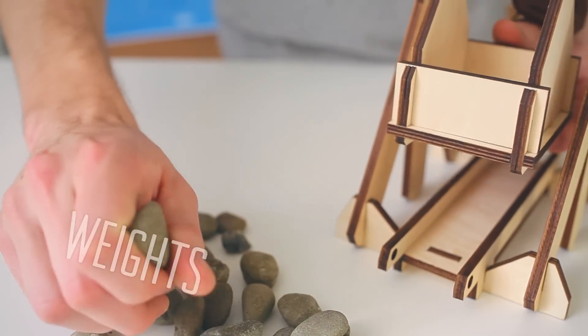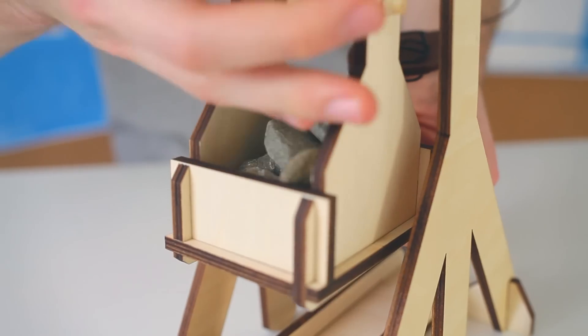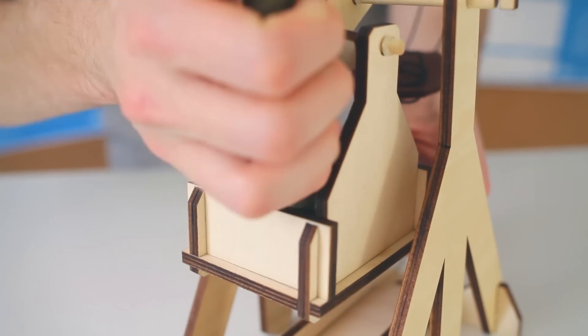Last you want to take whatever weights you found around your house. I grabbed some rocks from outside and put them in your counterweight. Then you've completed your trebuchet.